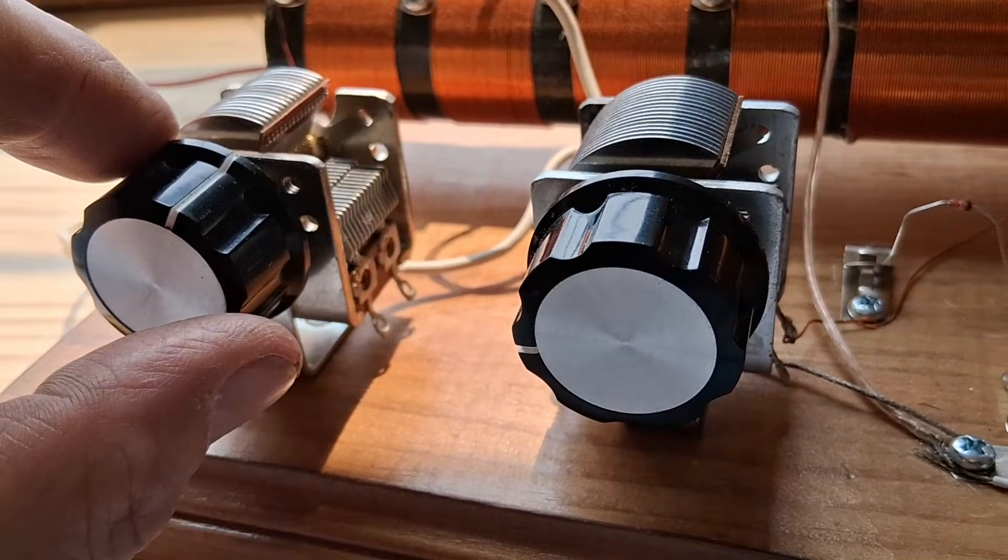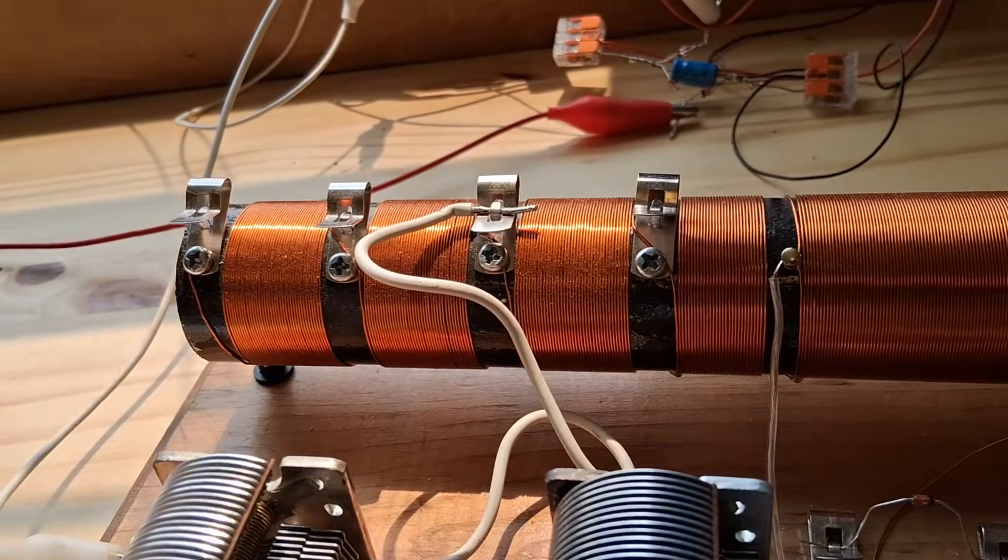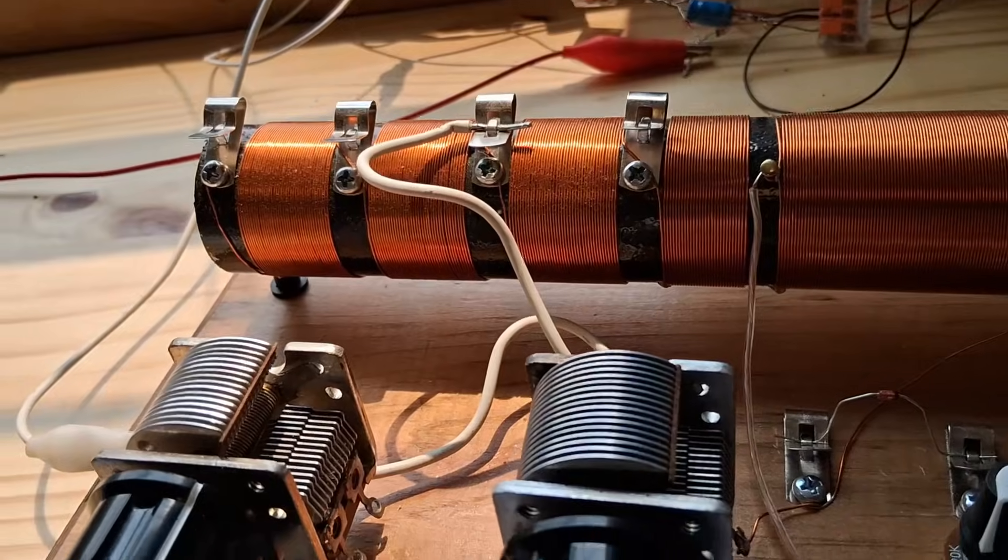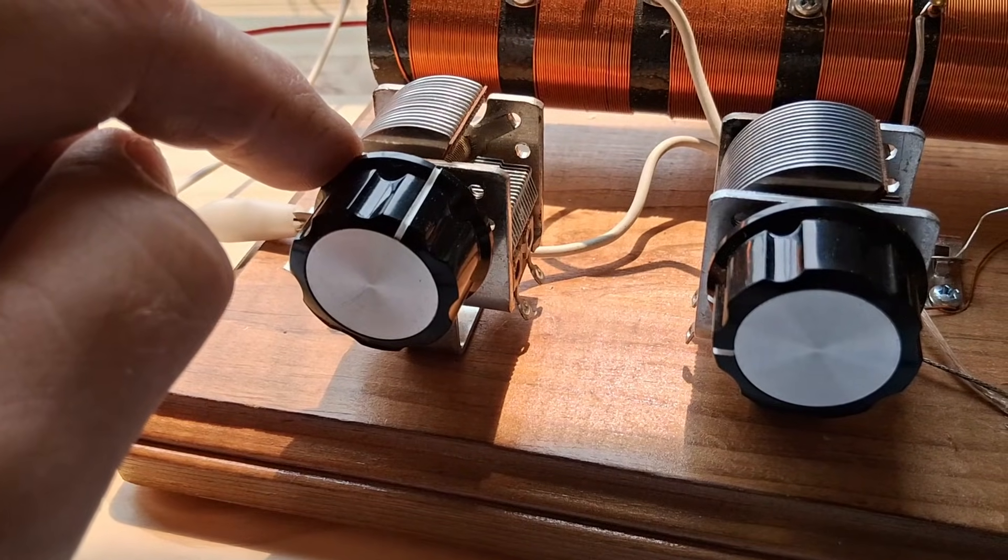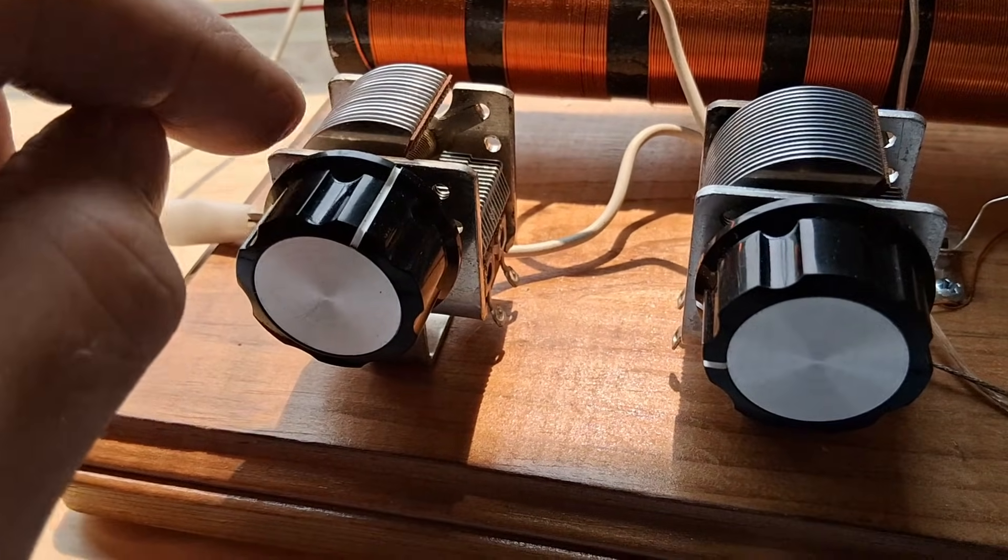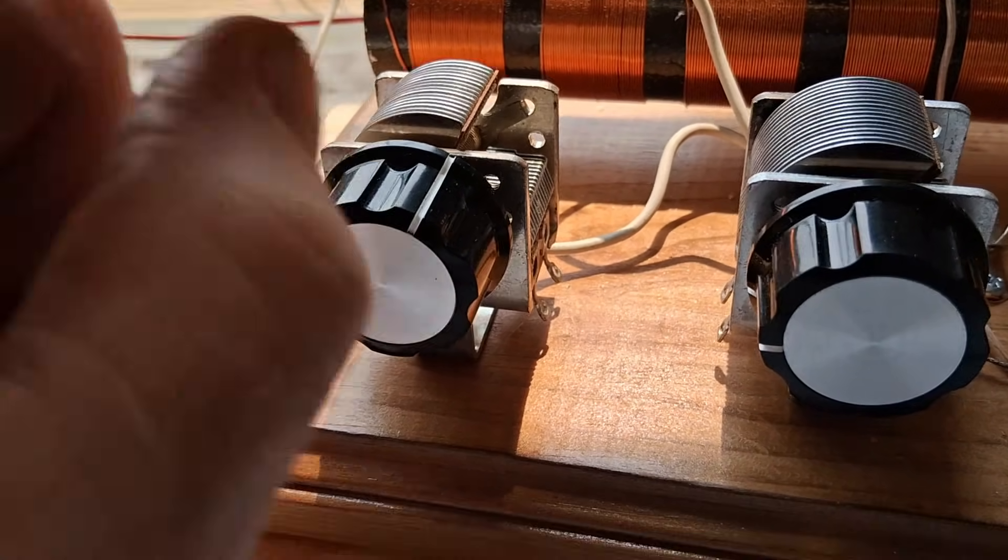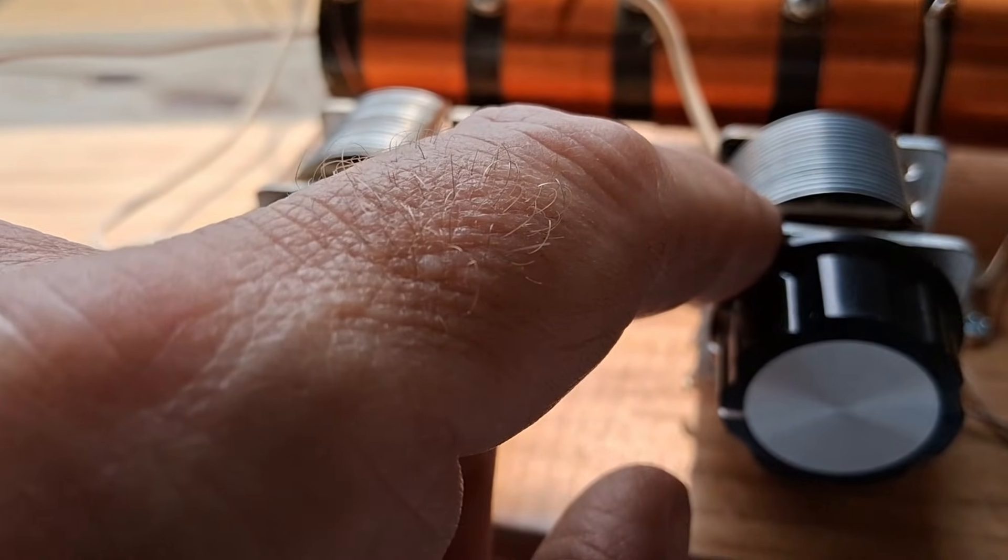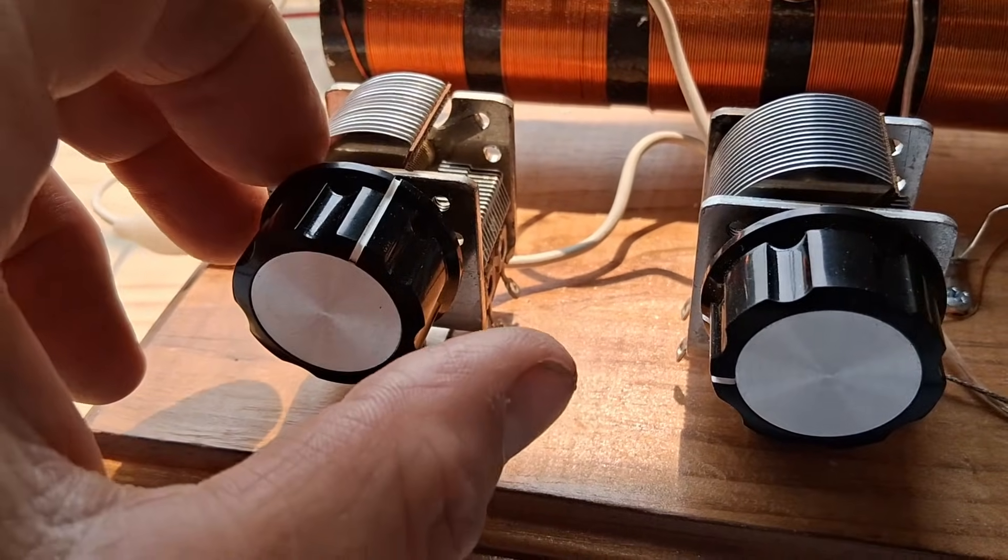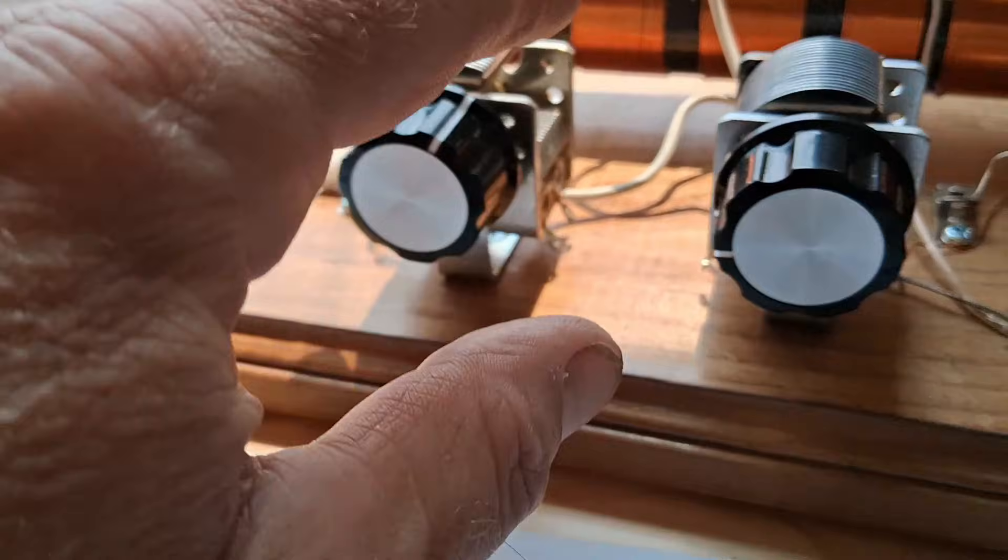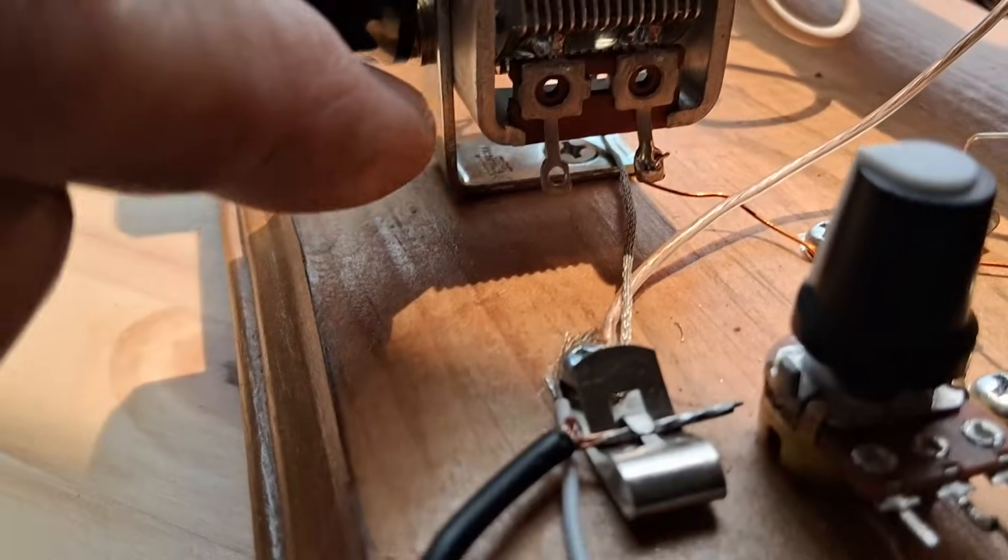These two tuning capacitors, they were the most expensive. These are 365 picofarad capacitors, air core. Now I got these off of eBay. They were used. I can't remember, it might have been maybe $16 for this one. I bought it a while ago. This one I think was more, probably like $26. You can get some newer ones, but they are kind of expensive. They can be up to 49 bucks. I think I've seen them. But I bought these used.